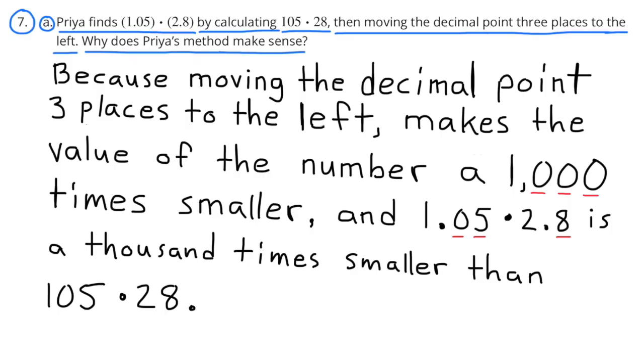Number 7: Part a: Priya finds 1 and 5 hundredths times 2 and 8 tenths by calculating 105 times 28, then moving the decimal point three places to the left. Why does Priya's method make sense? Priya's method makes sense because moving the decimal point three places to the left makes the value of the number a thousand times smaller. And 1 and 5 hundredths times 2 and 8 tenths is a thousand times smaller than 105 times 28.